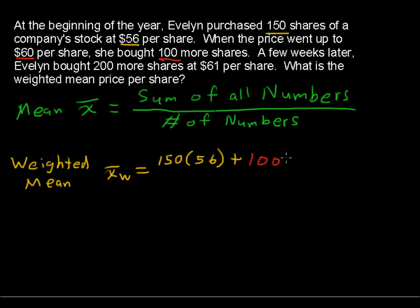That will contribute to our total sum of all the numbers. And then finally we had 200 shares at 61 dollars a share, so that number 61 shows up 200 times. So we have to add it 200 times to this sum on the top.